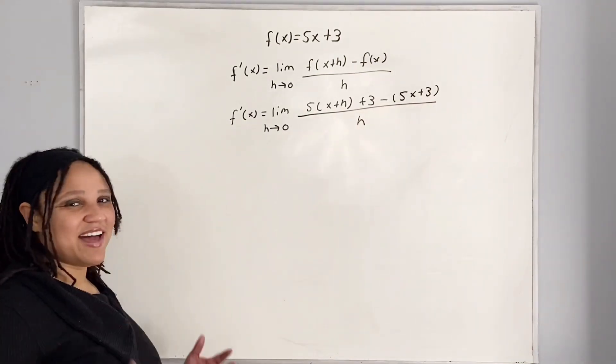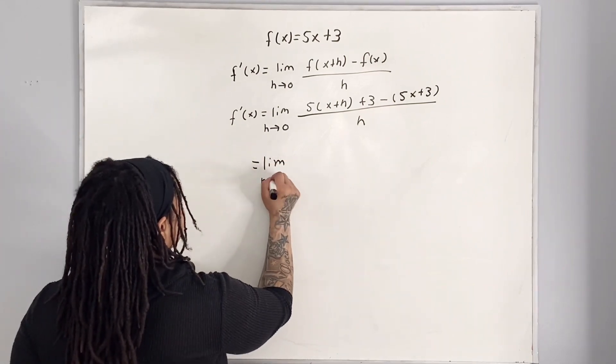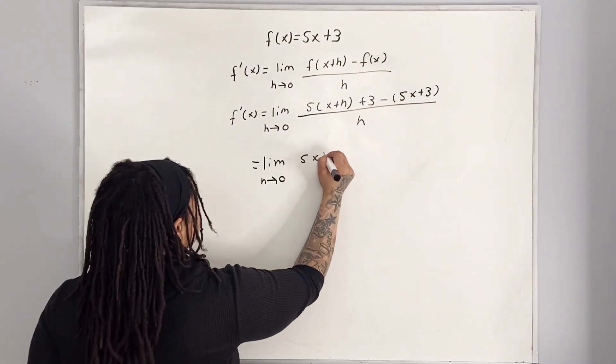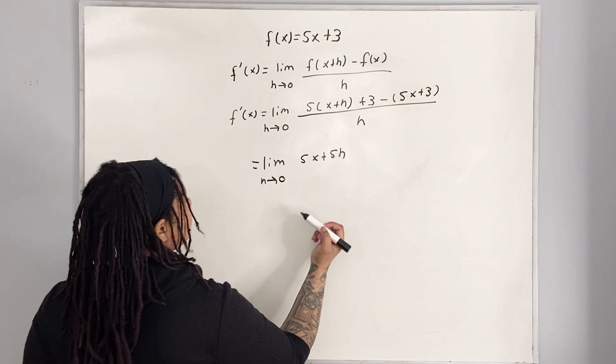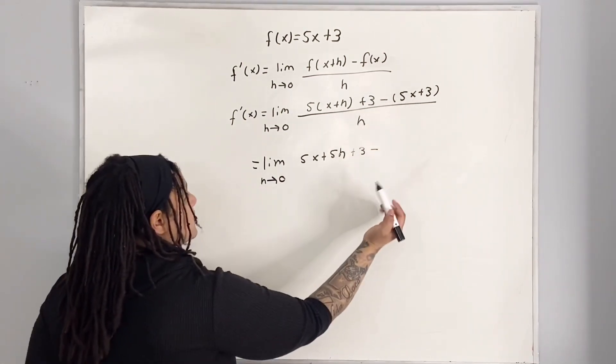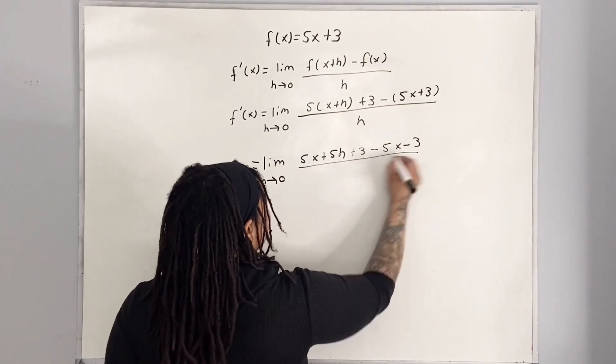So simplifying all of this we have the limit as h approaches 0 of 5x plus 5h. We're basically distributing the 5 plus 3 minus now you're going to distribute the negative sign. So we have negative 5x minus 3 all over h.